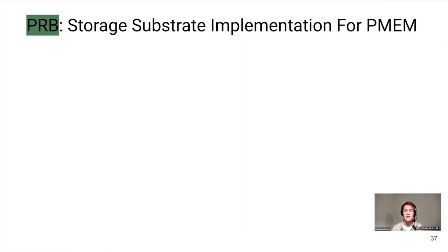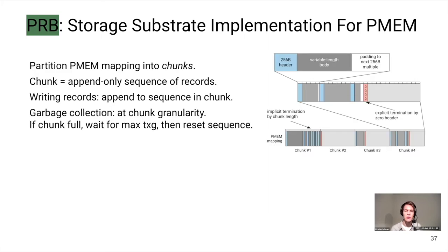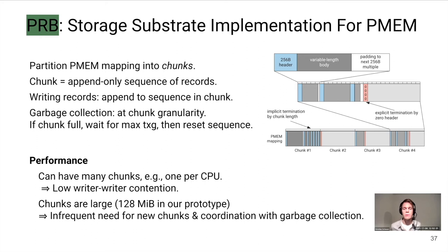I want to spend a few minutes on the storage substrate implementation because it really highlights how simple that layer can be. When PRB is initialized, it takes a PMEM mapping and partitions it into equal-sized chunks. Each chunk is then an append-only sequence of log records. When we want to write a record to PRB, we pick any chunk with sufficient space and insert the log record at the tail in a crash-consistent manner. For garbage collection, we wait until the chunk is full, then wait until all entries in it are obsolete, and reset the entire chunk to be filled again.